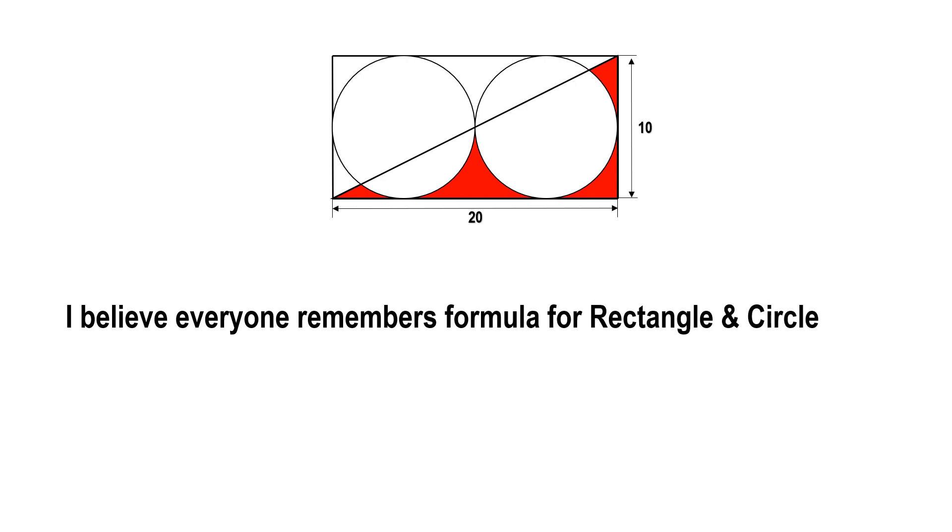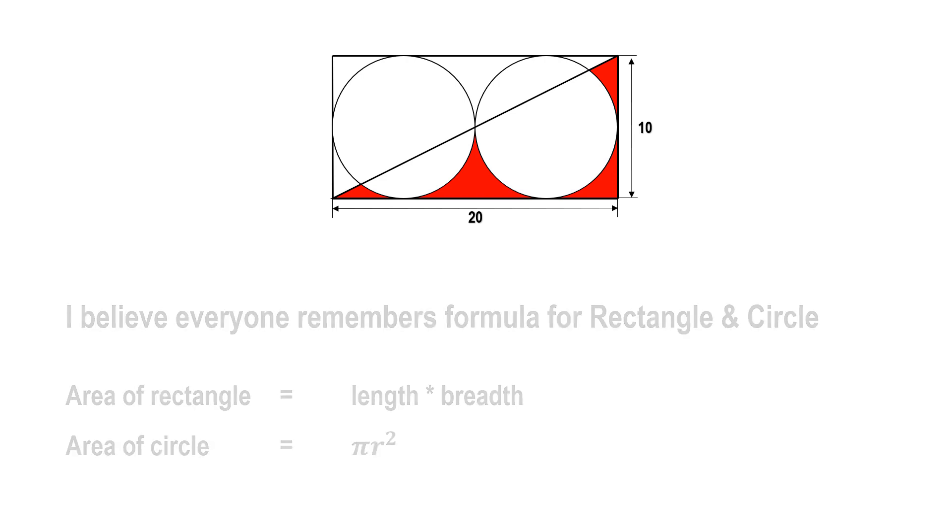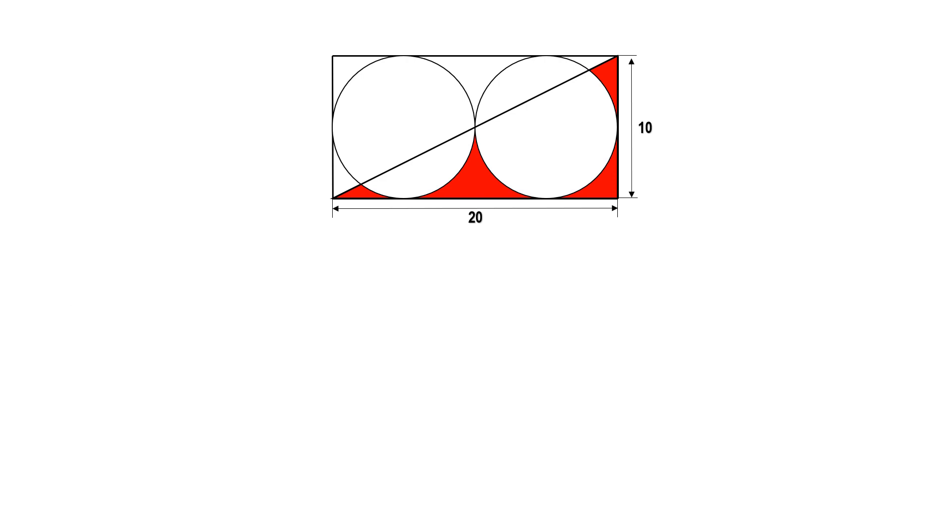I believe everyone remembers the formula to find out the area of the rectangle and the circle. Let me recall: area of the rectangle is length × breadth, and the area of the circle is πr². In our case to find the area of the rectangle, we already know the dimensions. The length is 20 and the breadth is 10.